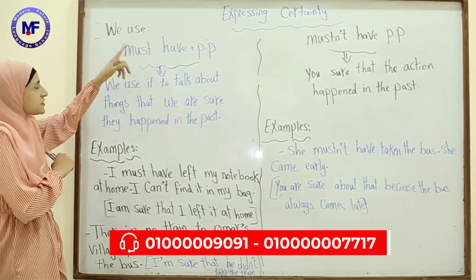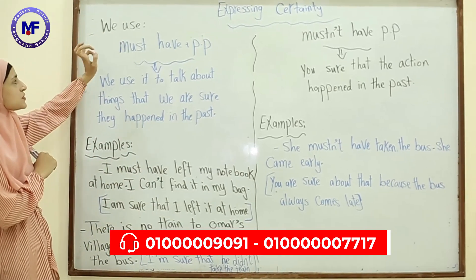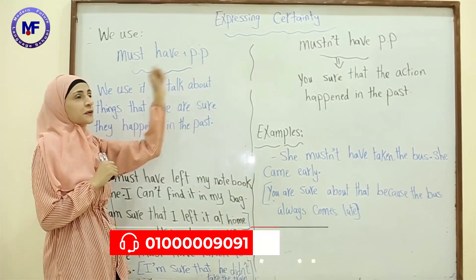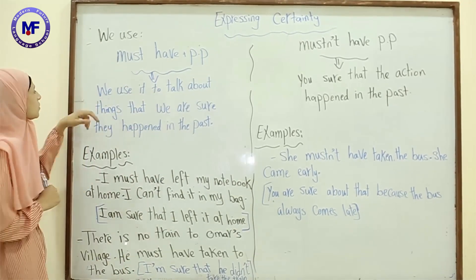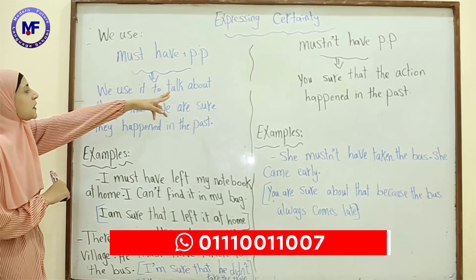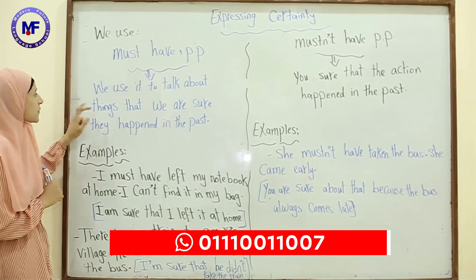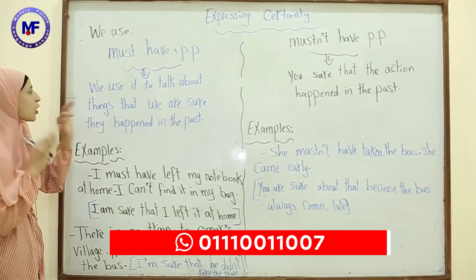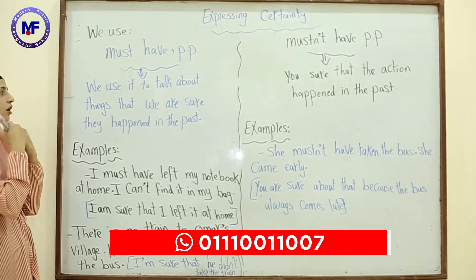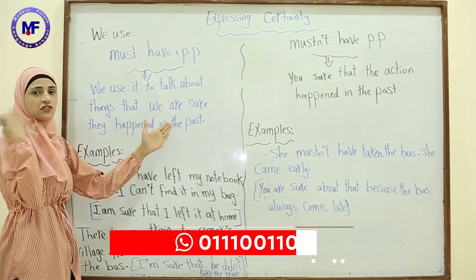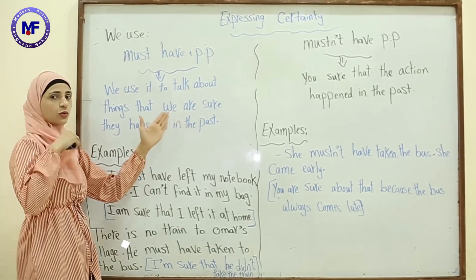I express certainty by using 'must have' and the past participle. We use 'must have' and past participle to talk about things that we are sure happened in the past.